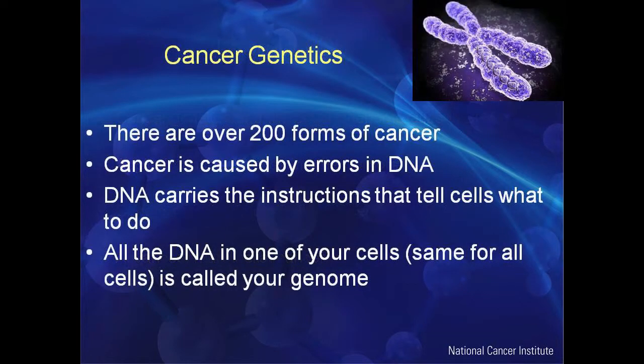When we talk about cancer, we're actually talking about over 200 diseases and a lot more subtypes. Cancer is caused by errors in DNA. DNA carries the instructions that tell cells what to do. All the DNA in one cell in your body is called the genome.